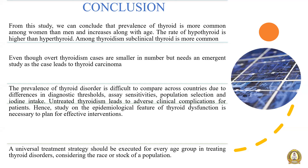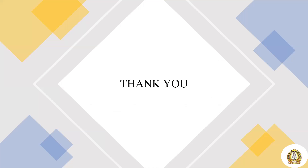In conclusion, the prevalence of thyroid disorder is more common among women than men and increases along with age. The rate of hypothyroid is higher than hyperthyroid, and subclinical thyroid is most common. Overt thyroidism cases, though smaller in number, need urgent study as they can lead to thyroid carcinoma. Prevalence comparison across countries is difficult due to differences in diagnostic thresholds, assay sensitivity, and iodine intake. Untreated thyroidism leads to adverse clinical complications, making epidemiological study necessary for effective interventions. A universal treatment strategy should be executed for every age group considering the race or ethnicity of a population.